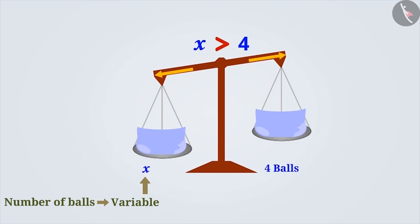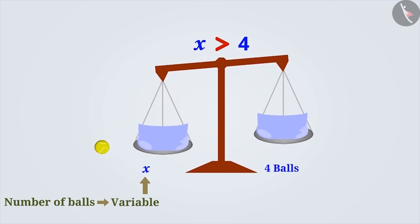What should we do if we have to balance both the scales? Obviously, we need to remove some balls out of the x balls. Here, if we take one ball out of the x balls, the number of balls in the left plate will be x-1.